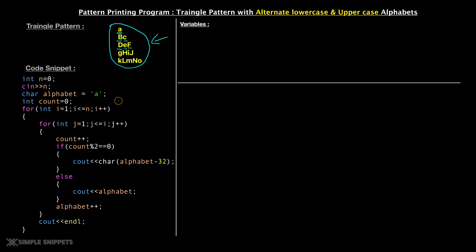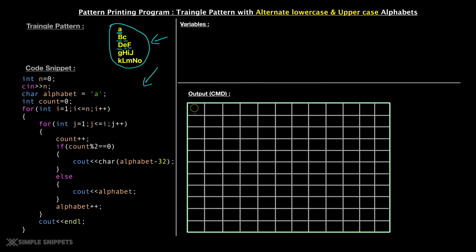So this is what we're going to try to understand and dry run, and then we will also see a program and execute this on the practical side. Make sure you watch this video till the end. Below here is the basic looping statement which we are going to dry run onto this digital blackboard, and each block will basically denote a space on the command prompt output screen.